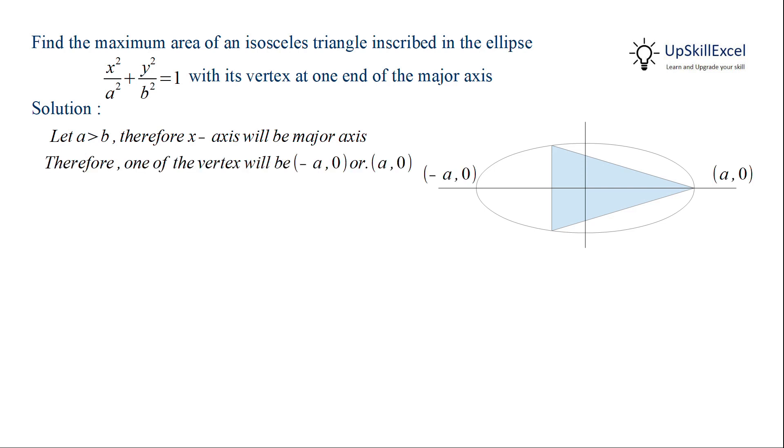This gives us two possibilities for the vertex of the triangle to lie on the major axis. The two vertices can be (-a, 0) or (a, 0). Let's take (a, 0) as the vertex.